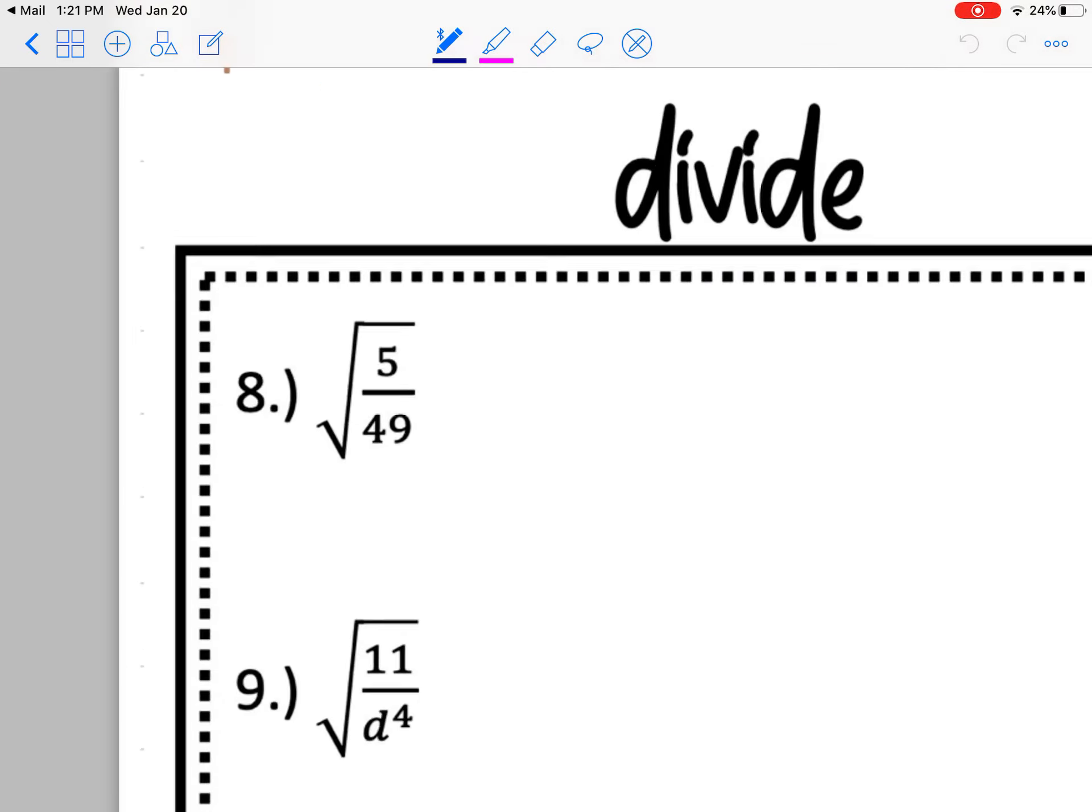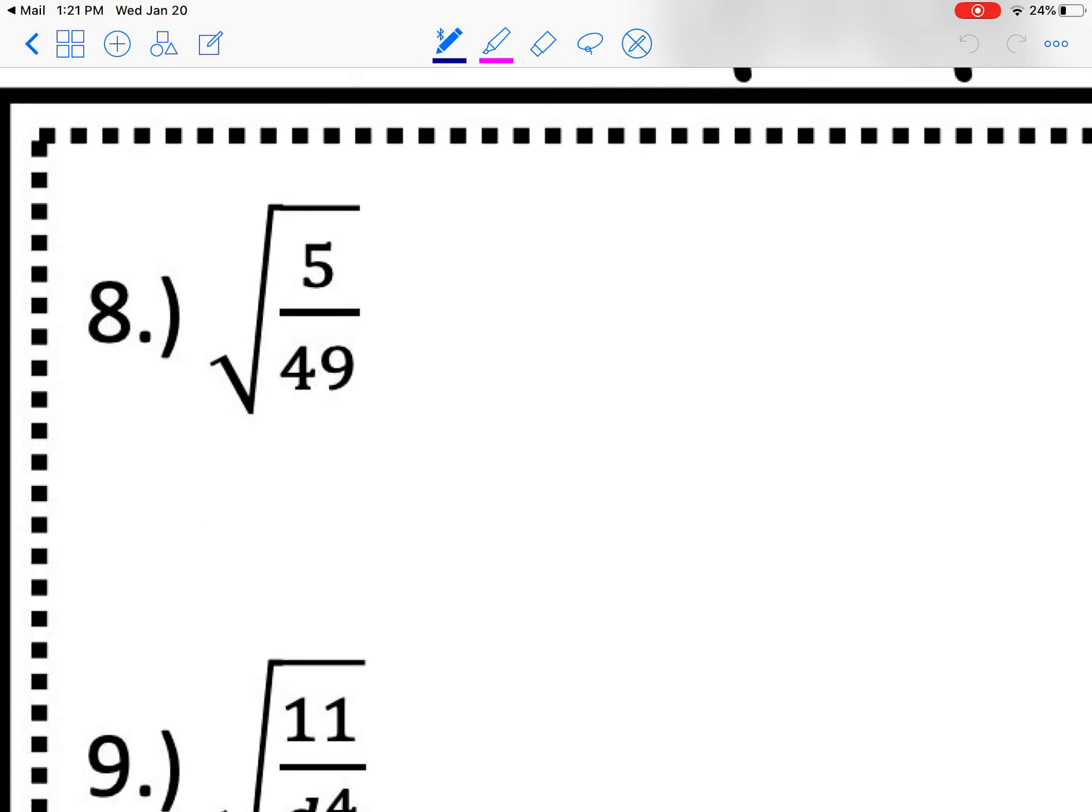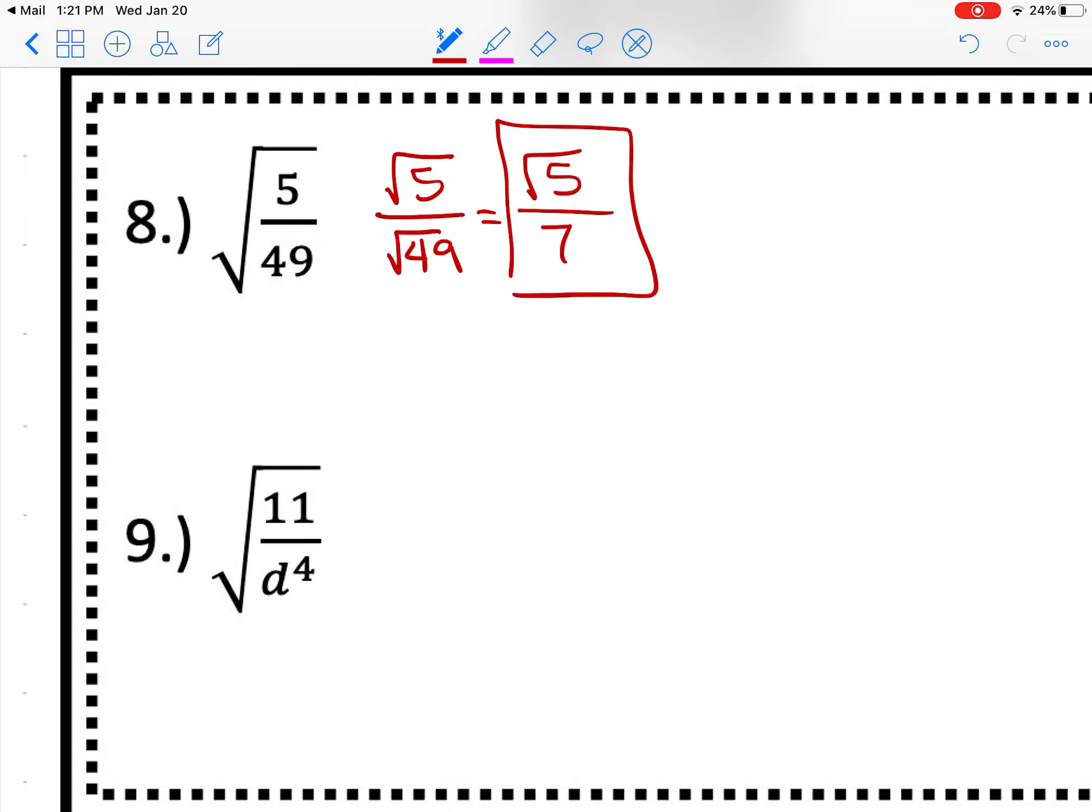Okay, division. When you see a problem like this, my advice would be to first rewrite it. We know nothing's going to change with that square root of 5. And so we do know that square root of 49 is perfect, which gives us a 7. And that would give us that one. Okay, check the key for number 9. And then let's finish out with rationalizing.